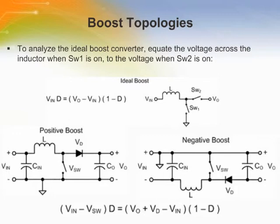Because of its ability to step up a voltage, the boost converter is popular in many battery-powered applications. The basic, practical boost converter uses a freewheeling diode in place of SW2. Since the inductor is in series with the input, the input capacitor sees low ripple current. With a diode at the output, the output capacitor sees high pulsating current.